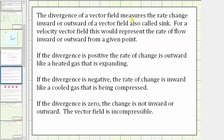The divergence of a vector field measures the rate of change inward or outward of a vector field, and is also called sink. For a velocity vector field, this would represent the rate of flow inward or outward from a given point. If the divergence is positive, the rate of change is outward, like a heated gas that is expanding. If the divergence is negative, the rate of change is inward, like a cooled gas that is being compressed. If the divergence is zero, the change is not inward or outward, and we say the vector field is incompressible.